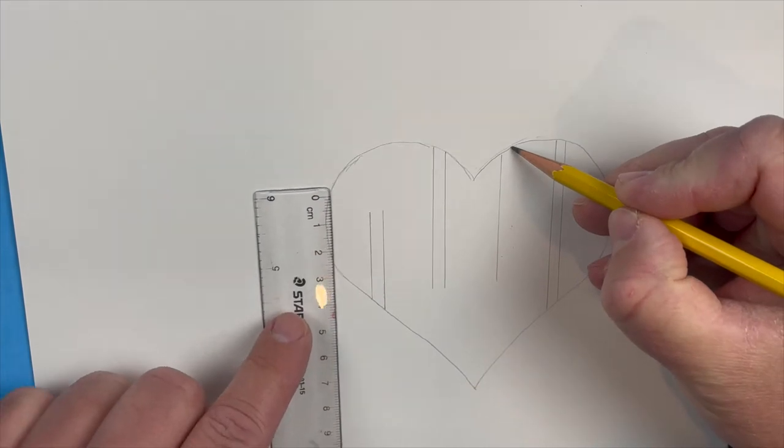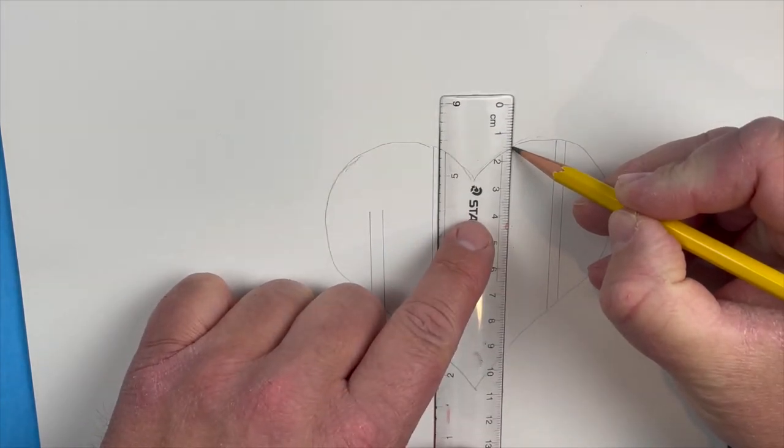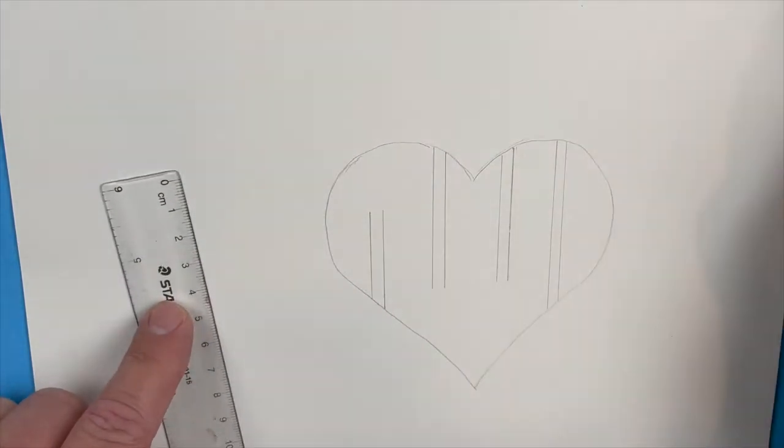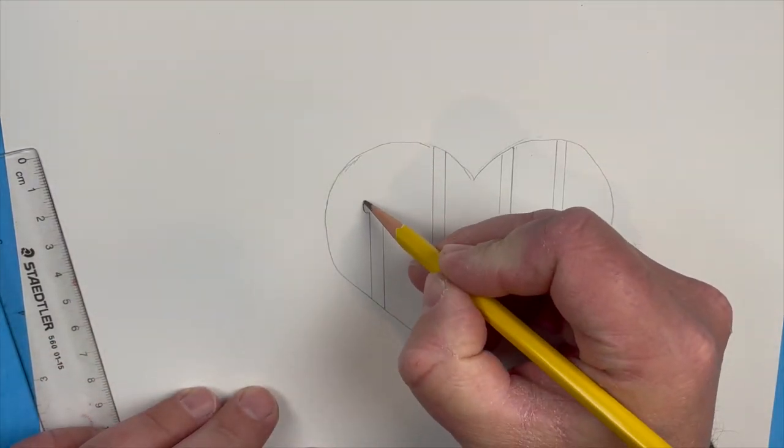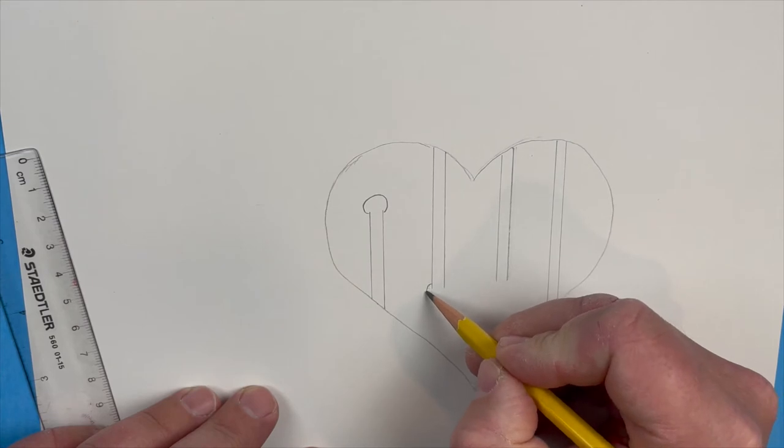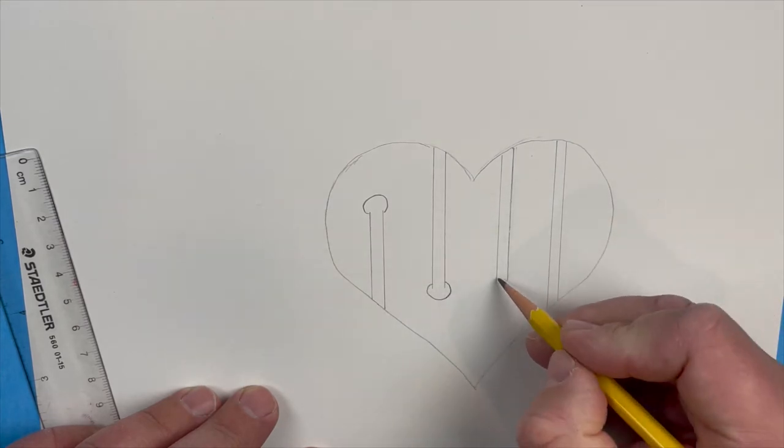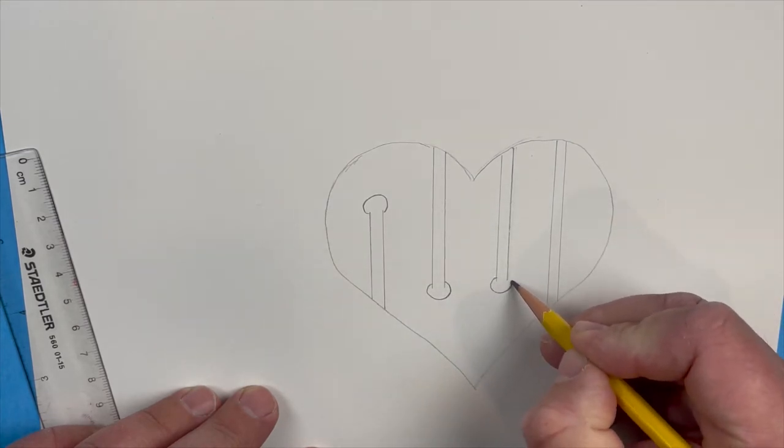Once you're done with that, you can look at it. If you think it's a little bit off then fix it. You see I had to fix mine here. That's the basic shape right here. Next thing you're going to do is draw a circle on the ends of the three lines just like so.